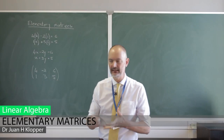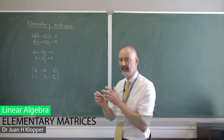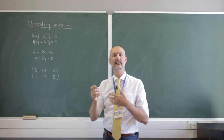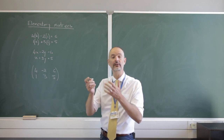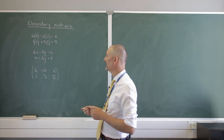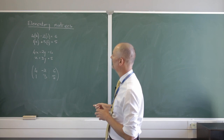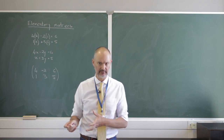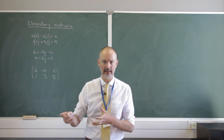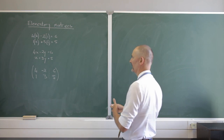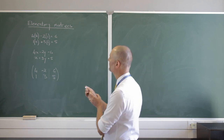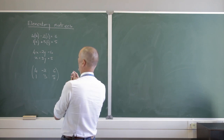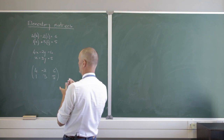Let's continue our look deeper into matrices. Today I'm going to talk about elementary matrices, which are used to solve systems of linear equations to get to reduced row echelon form. This is in preparation for something called LU decomposition — lower upper — and we'll talk about lower triangular and upper triangular matrices in the next video. Today we concentrate on elementary matrices and how we get to reduced row echelon form.